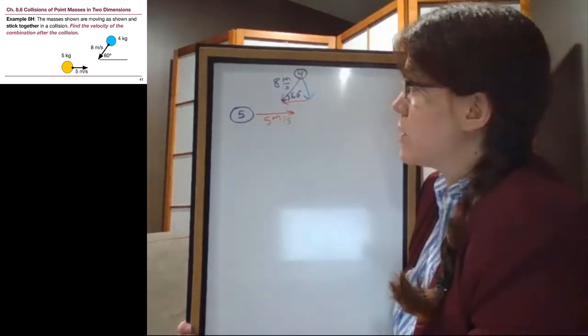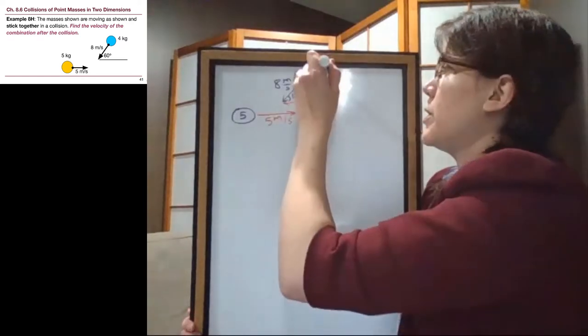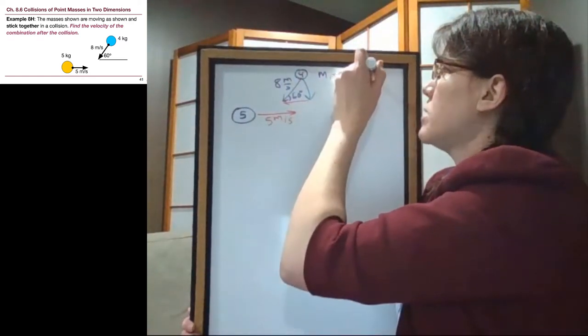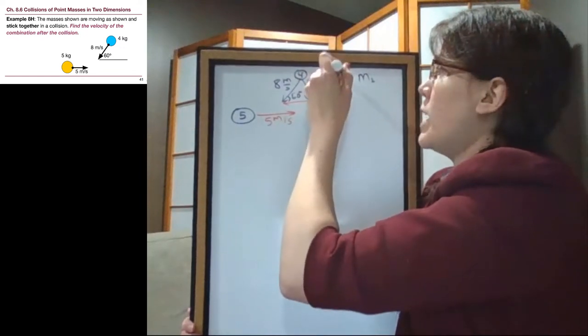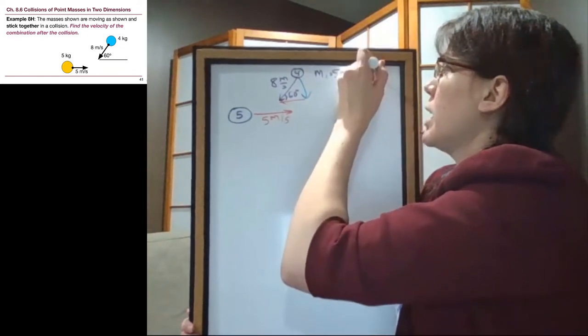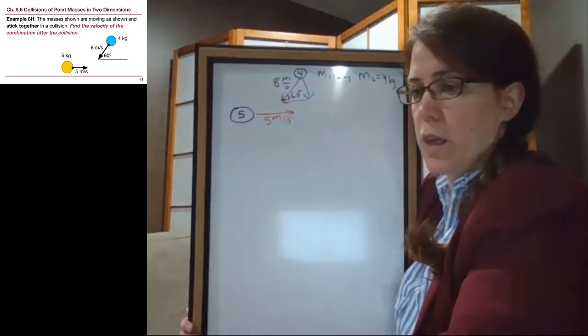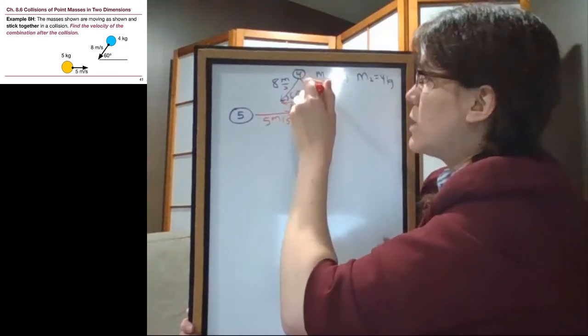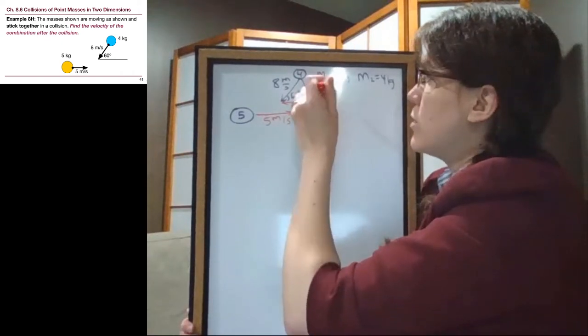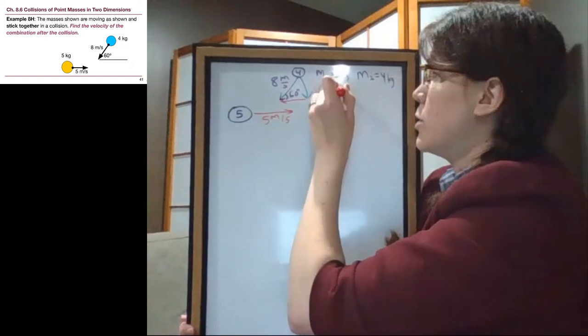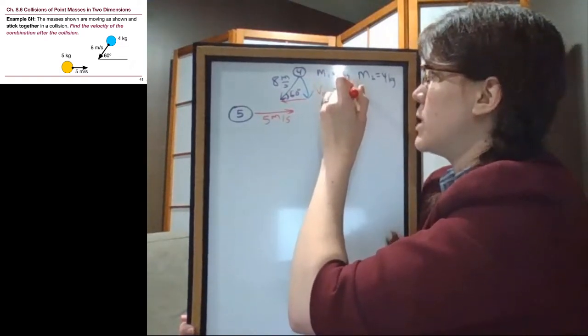So we can make a list of the given information here the same way that we did before. We have the two masses. So m1 is 5 kilograms, m2 is 4 kilograms.